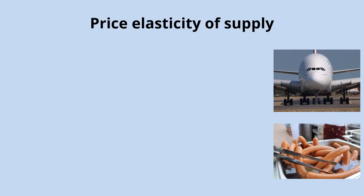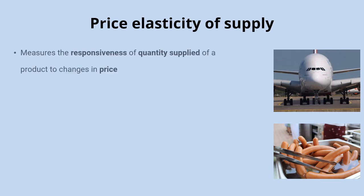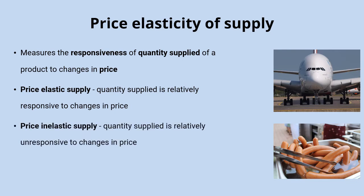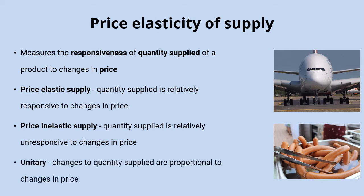When we looked at supply generally, we said that producers would respond to changes in price — if price increases, producers are incentivized to increase their quantity supplied to take advantage of higher profits. With price elasticity of supply, we're talking about just how responsive that quantity supplied is to those changes in price. Products where quantity supplied responds quickly and easily are called price elastic. For others, quantity supplied is relatively unresponsive, and we talk about price inelastic supply. Products with unitary price elasticity of supply see a proportional change — for example, a 10% increase in price leads to a 10% increase in quantity supplied.